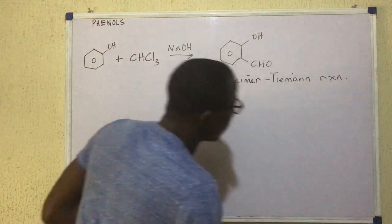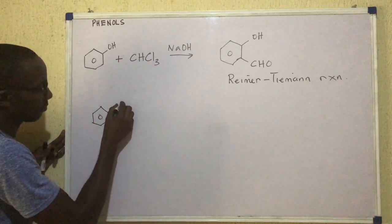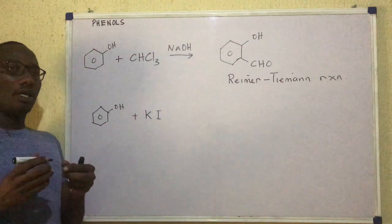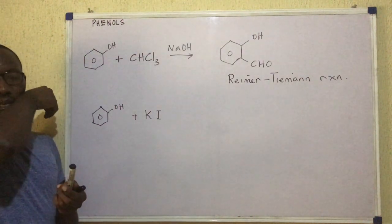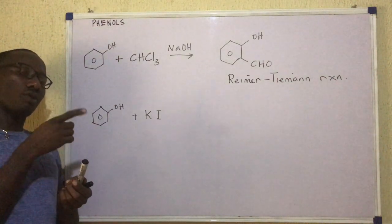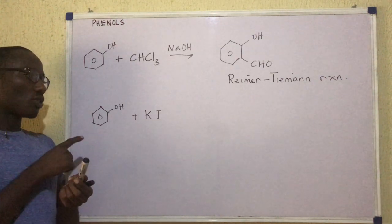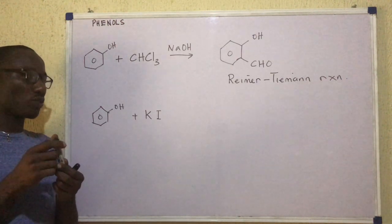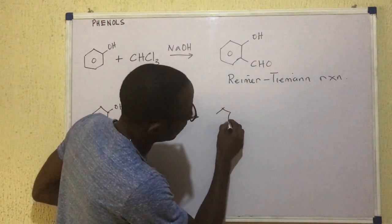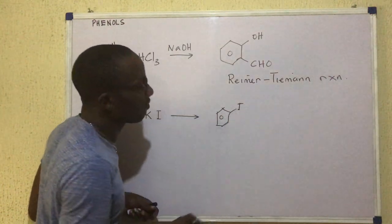Moving beyond the Reimer-Tiemann reaction, let's see the reaction between phenol and potassium iodide. Now, this one is what we talked about before that alkyl halides can be converted into alcohols and alcohols can be converted back into alkyl halides. So in this case, when phenol reacts with KI, we are going to get a product that looks like this. That's our ring. And then on this side, we have the I.